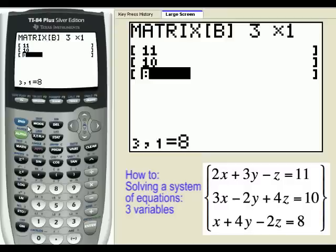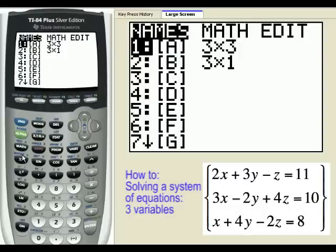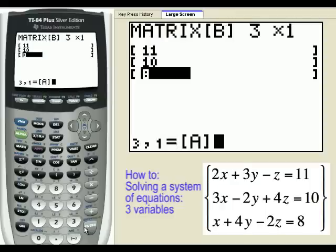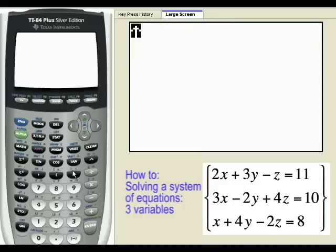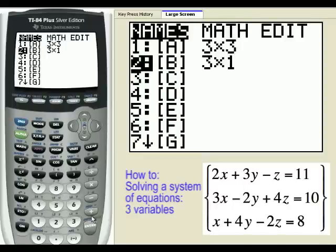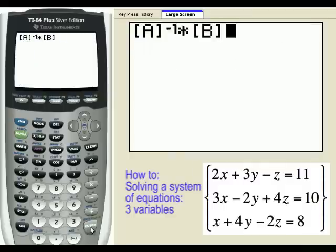So how do we use these two matrices to solve the system? We take the inverse of matrix A and multiply it by that 3 by 1 matrix, which we put in B.